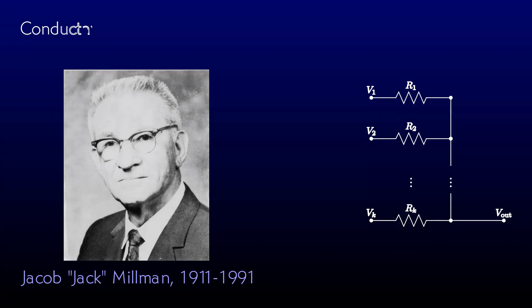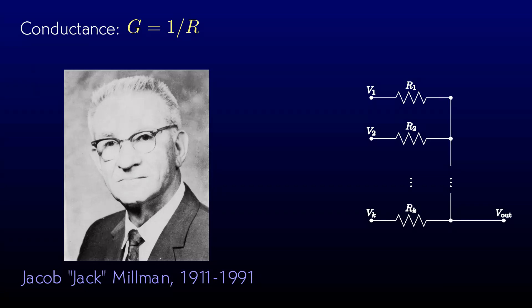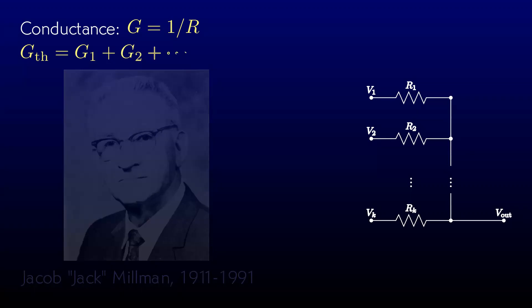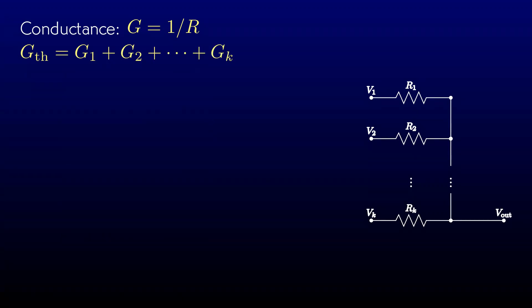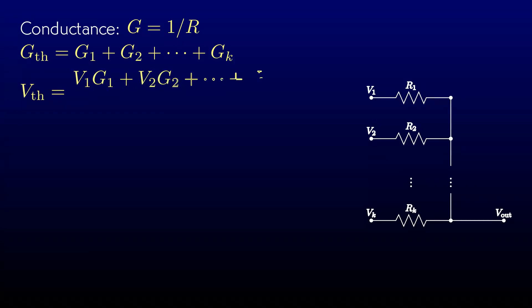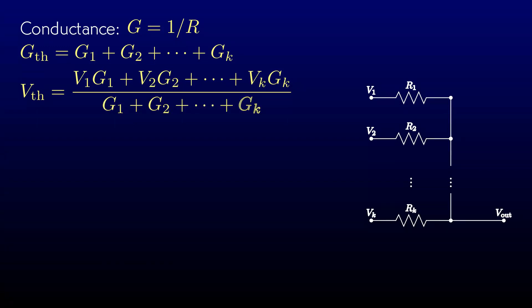Millman's theorem is most easily stated in terms of conductance. Conductance is just the reciprocal of resistance and is usually written with the letter G, measured in Siemens — the reciprocal of ohms. Millman's theorem states that the Thevenin equivalent conductance of this network is just the sum of conductances of the individual resistors. The Thevenin equivalent voltage is the sum of the individual currents for each resistor divided by the Thevenin equivalent conductance. It's not too hard to prove this using the same methods as the two-resistor divider, looking at open circuit output voltage and short circuit output current.